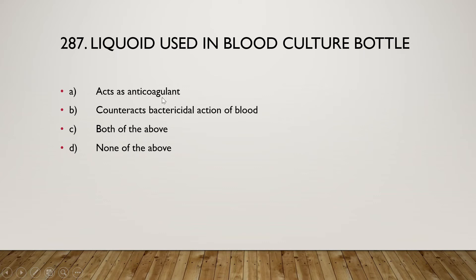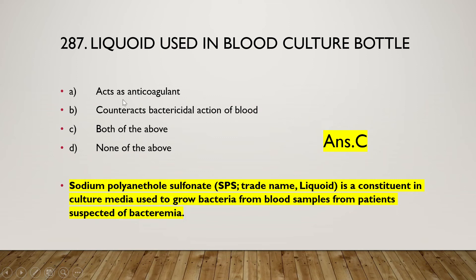The next question is: liquid used in blood culture bottles acts as (A) an anticoagulant, (B) counteracting bactericidal action of blood, (C) both of the above, or (D) none of the above. The right answer is option C — both of the above. This liquid, sodium polyanethol sulfonate, is a constituent in culture medium used to grow bacteria from blood samples of patients suspected of bacteremia.